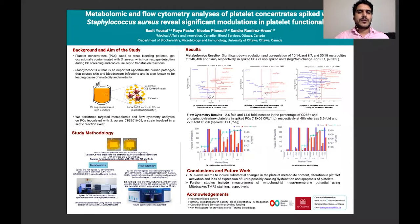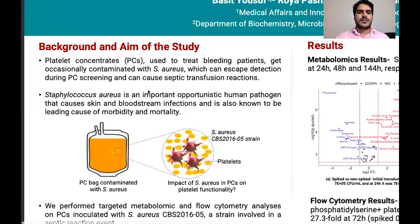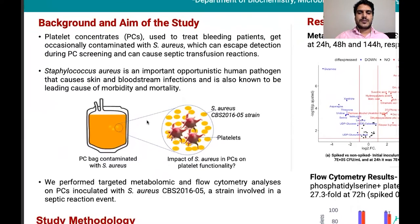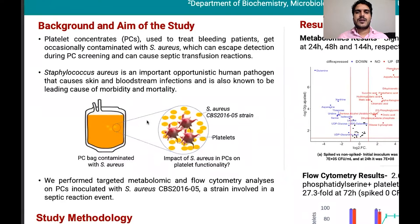Going to the background of the study: platelet concentrates — I'll be referring to them as PCs — represent an essential transfusion medicine to treat bleeding disorders. However, PCs occasionally get contaminated with skin-residing bacteria during venipuncture at the time of blood collection. Staphylococcus aureus has been reported to be one of the predominant bacterial contaminants in PCs. Our research question was to understand the Staphylococcus aureus–platelet interaction and its impact on platelet functionality and metabolism.